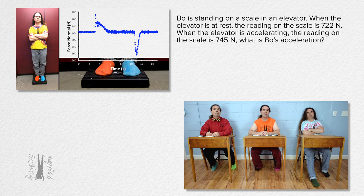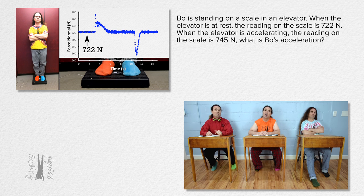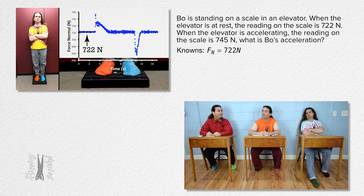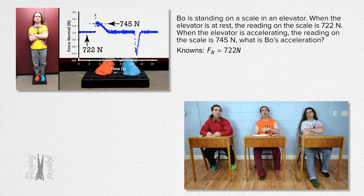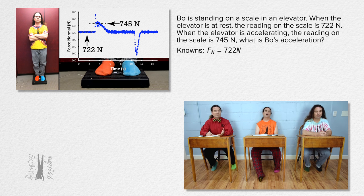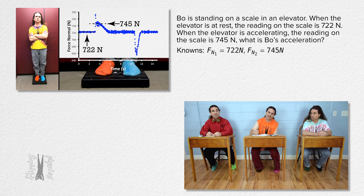Bo is standing on a scale in an elevator. When the elevator is at rest, the reading on the scale is 722 newtons. We learned in that lesson that the reading on the scale is the same as the force normal acting on Bo, so force normal one equals 722 newtons. When the elevator is accelerating, the reading on the scale is 745 newtons. What is Bo's acceleration? So we actually have two force normals — two parts to this problem. Force normal one is for part one and force normal two is 745 newtons. We are solving for the acceleration in the y-direction for part two, so that equals question mark.